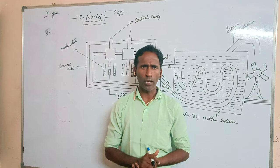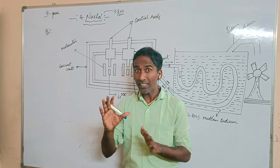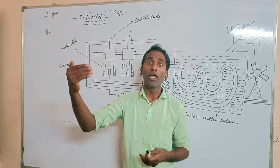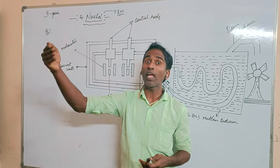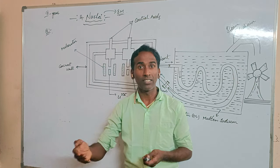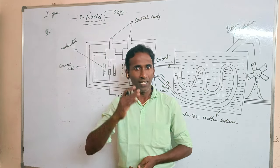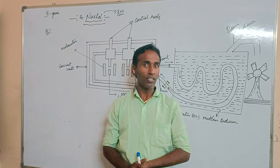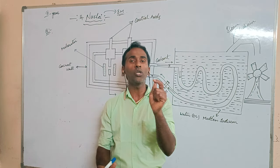So what is a controlled chain reaction? Suppose I help one person, and that person helps three others, and each of those three helps another three — that means one person leads to three, three leads to nine, nine leads to twenty-seven. Like that, the chain reaction keeps increasing. That is called a chain reaction.